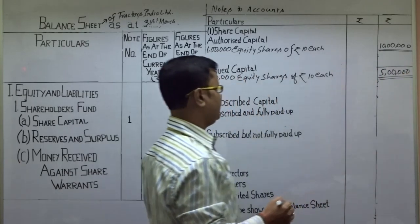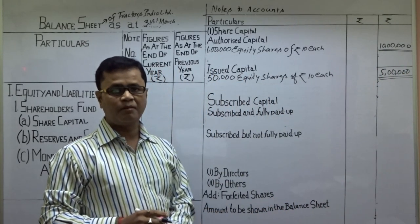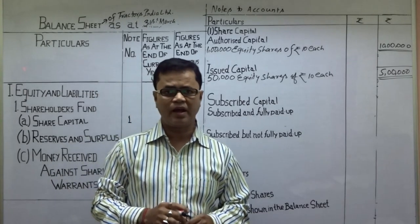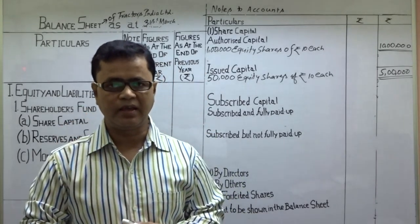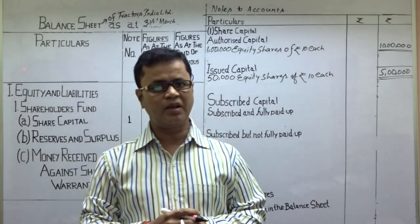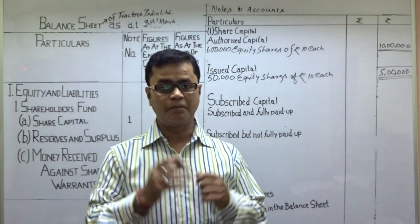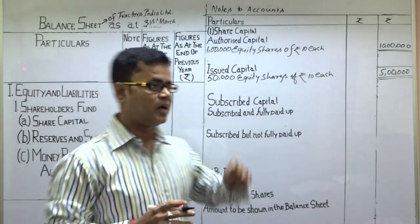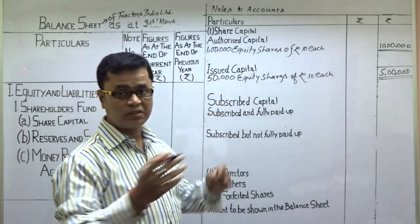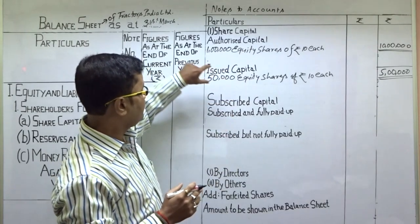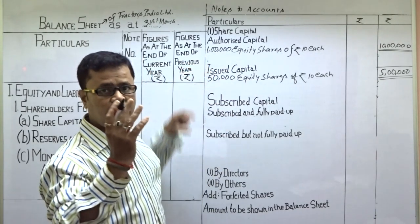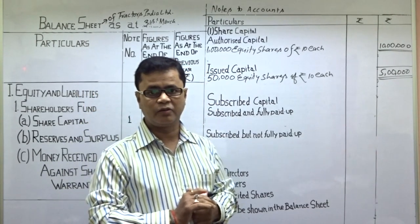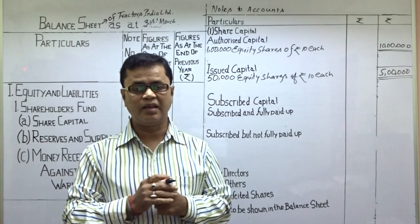यह तो issued capital हो गई। अब कंपनी कह रही है कि एक shareholder जो Baralang है, उन्होंने पैसा payment नहीं किया — किसका नहीं किया — call का। और company fully subscribed है यानि 50,000 shares issue किए — उसमें 500 shareholders ने पैसा payment नहीं किया।